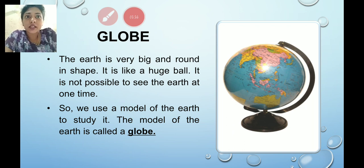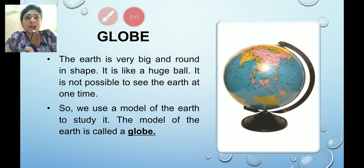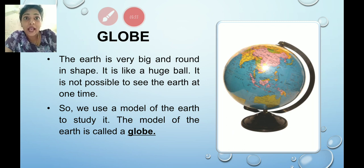The earth is very big and round in shape — it is like a huge ball. It is not possible to see the earth at one time. Now, how was it proved that the earth is round in shape? In 1519, a Portuguese sailor started a Spanish expedition from Spain. He sailed in the same direction for three years and at last reached the same point. So it was practically proven that our earth is not flat — it is spherical in shape, and it is not easy to study the whole earth at one time. That is why we use a model of the earth, that is the globe.